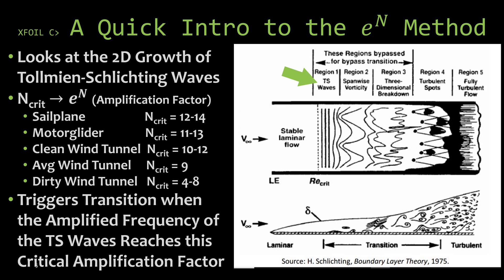And I went ahead and gave you some typical values for the n critical number. The standard method uses an n critical value of 9. And so in this method transition is determined when looking at this amplification of these TS waves and when that reaches this critical amplification factor it's considered to have transitioned. XFOIL does allow you to change this n critical value. So let's go ahead and look at how we can do that.